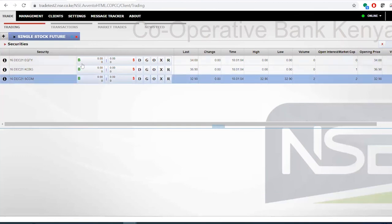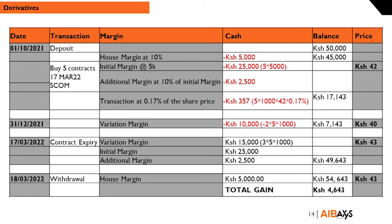Brian, before you continue — how much money did she have to put up for the trade? We're continuing with our example of Peter and Janet — she walked in with KES 50,000. The absolute minimum amount would be KES 25,000 plus KES 5,000 additional margin plus transaction costs plus house margin — so just under KES 30,000. If she had walked in with KES 30,000 she should have been fine for all five contracts.